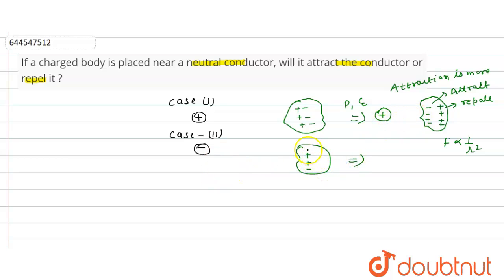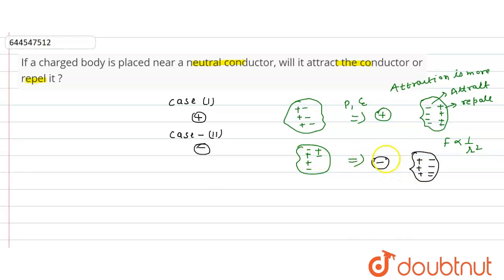In case two, the charge body is negative. The negative charges in the conductor are repelled and move away, while the positive charges are attracted and come nearer to the negative charge body. So again, the attractive force is greater than the repulsive force, and overall attraction is the result.